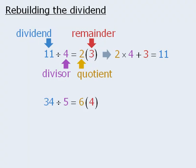Similarly, since 34 divided by 5 equals 6 with remainder 4, we can take the 3 values shown here and use them to create an equation that ends up equaling the dividend 34. We can write 6 times 5 plus 4 is equal to 34.